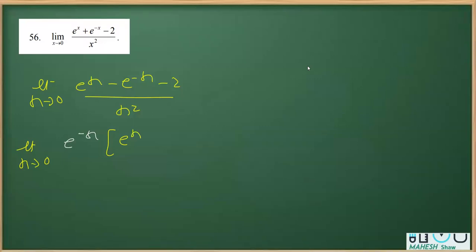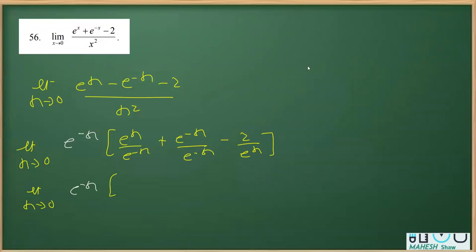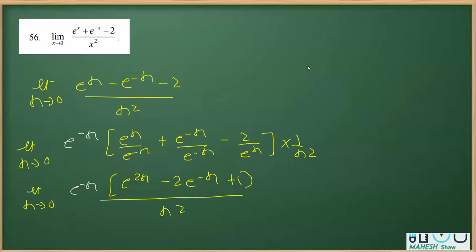Taking common means dividing each term by the common factor. So we get: limit x tends to 0 of e raised to the power minus x, multiplied by [e raised to the power 2x — because same base, powers subtract: x minus (minus x) = 2x — then minus 2, then e raised to the power minus x over e raised to the power minus x which cancels to give 1], all divided by x squared.